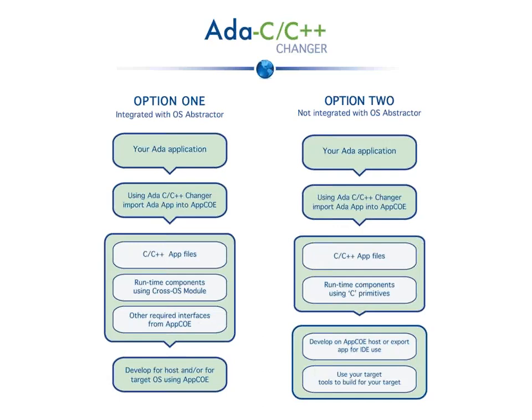These diagrams depict two different ways that ADA C/C++ Changer can be utilized during the conversion project. The first option includes integration with OS Obstractor, which allows the converted C and C++ code to utilize OS Obstractor scheduled primitives to obtain real-time performance, portability, and stability across a multitude of OS platforms, thereby greatly minimizing any needed re-hosting effort now or in the future. This option is also appropriate for ADA applications that need to be re-hosted on a new OS. The second option is to use the runtime components using C primitives instead of the OS Obstractor scheduler primitives, which is appropriate for ADA applications that are not being re-hosted on a new OS and if the target OS is not real-time.